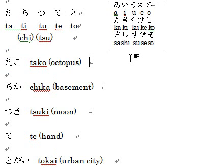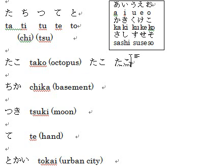じゃ、れんしゅうしましょう。Let's practice! The first word is TAKO. TAKO means octopus — T A K O. If you refer to TAKO as octopus, normally we type in katakana, so you press F7 here. はい.